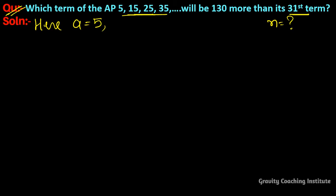First term a = 5. Common difference d = second term minus first term, so this is 15 minus 5 equal to 10. And according to the question: